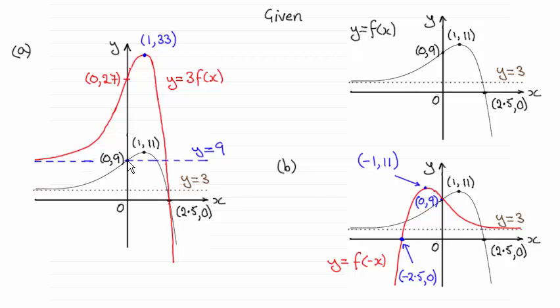And where the graph crossed at 0, 9, the y axis at 0, 9, we multiply the y coordinate by 3 and it's now at 0, 27. And as for this maximum point at 1, 11, then that gets increased by a factor of 3 parallel to the y axis. So you can see it's now 1, 33, 11 times 3 is 33.